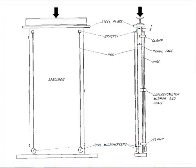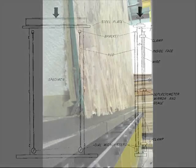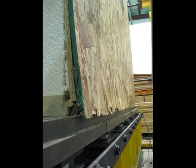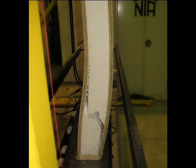Compressive or axial load evaluation of sheeting materials on standard wood framing measures a panel's resistance to deformation and structural strength when exposed to a force parallel to the height of the wall.